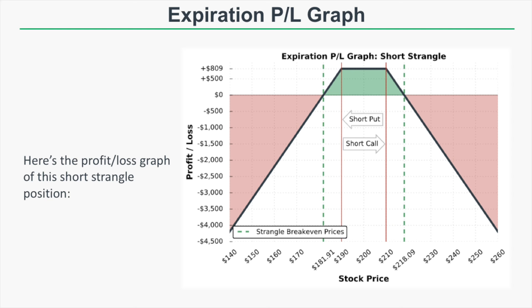Our break-even prices are the short put strike minus the credit received, and the short call strike plus the credit received. That brings our break-even prices to $181.91 and $218.09. So if the stock price remains between $181.91 and $218.09, we will make money on this trade. If the stock price is right at one of our break-even prices, one of our short options will be worth exactly what we sold the strangle for, resulting in no profit or loss.